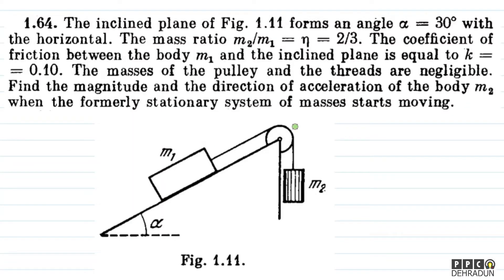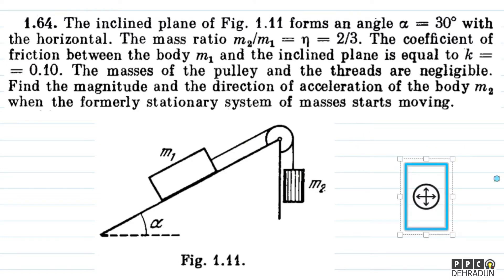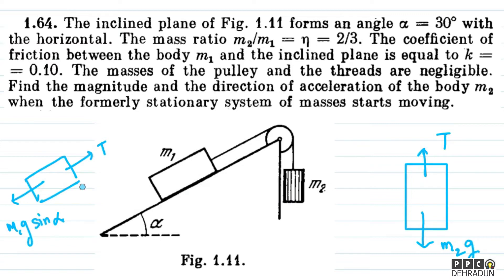First of all, we have to think about which direction the motion will be — will m2 go down or will m2 go up? So first, if we draw the free body diagram of m2, the forces we can show are: downward force m2g, and upward force tension. Additionally, for m1's free body diagram, along the incline the forces are: tension on one side and m1g·sin(alpha) on the other side. Friction will act depending on the direction of motion — in the opposite direction to oppose motion.